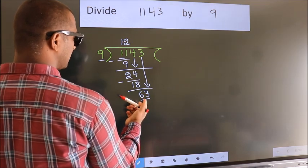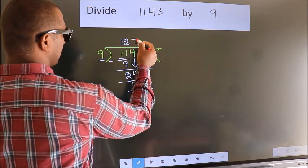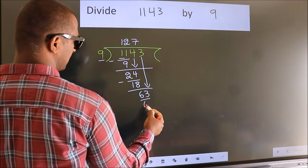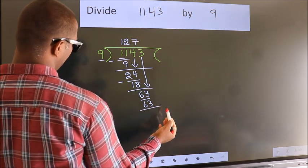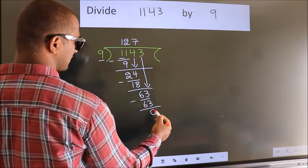When do we get 63 in the 9 table? 9 times 7 is 63. Now, we subtract. We get 0.